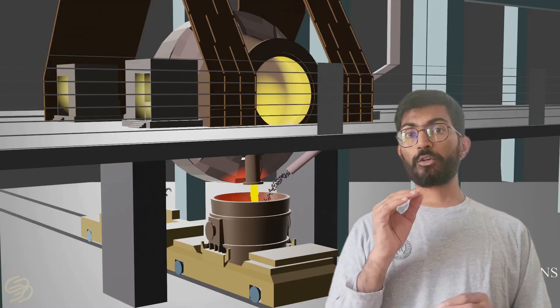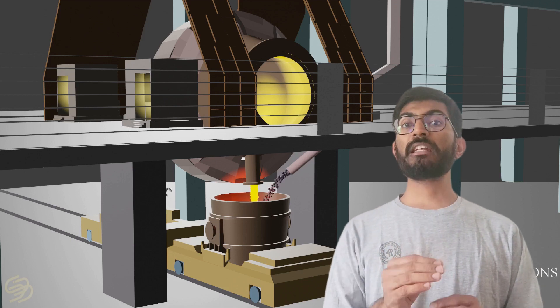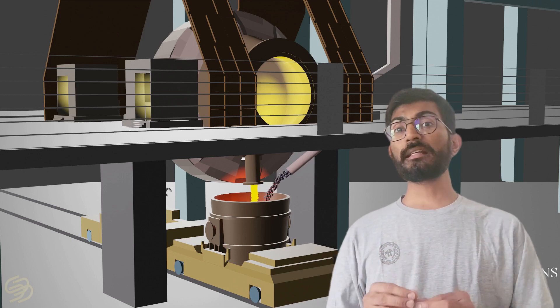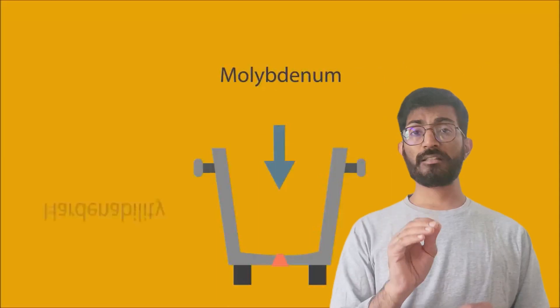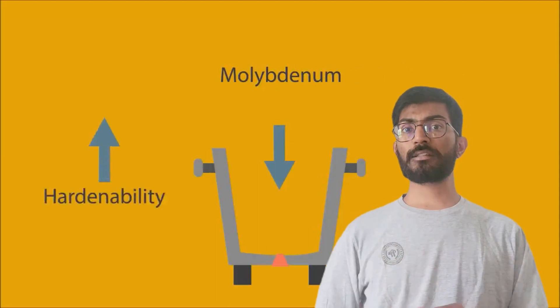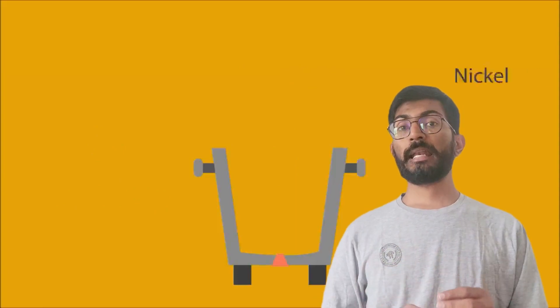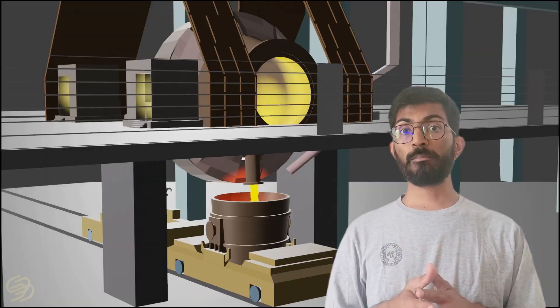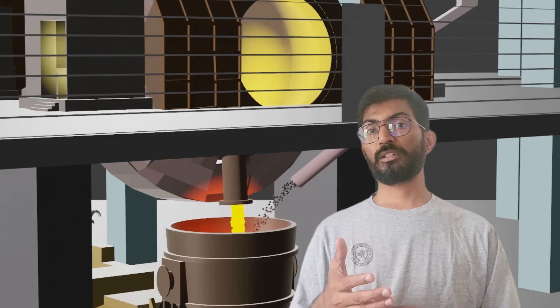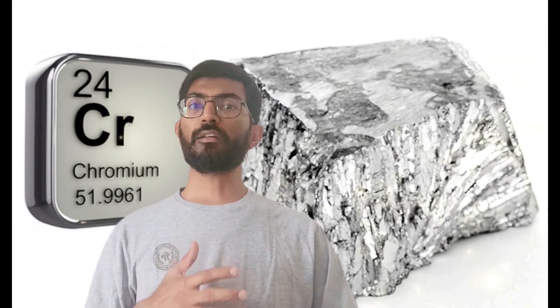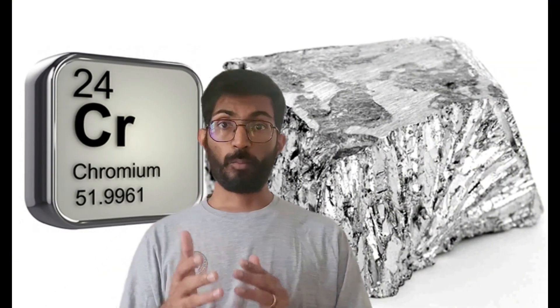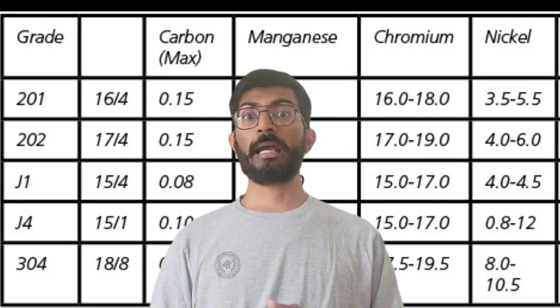When chromium is added with molybdenum and nickel, it increases hardness and toughness. This is exactly how stainless steel is manufactured — when we want to make stainless steel, we add an extra quantity of chromium. When the chromium content is more than 10 percent, we get a nice silvery look on the outside.